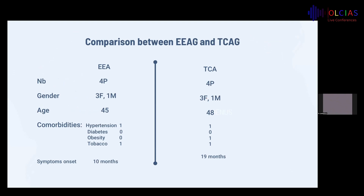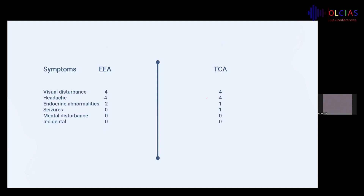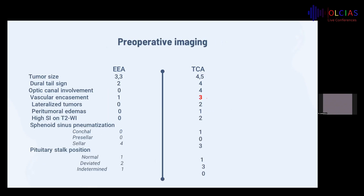Comparing the two groups: number and gender are the same, with no significant difference. Mean age was 45 in the first group and 48 in the second. No difference in comorbidity. Symptom duration was 10 months for the first group and 19 months for the second. Visual disturbance and headache were the same in both groups. Endocrine abnormality was more frequent in the first group. Tumor size was smaller in the endoscopic endonasal approach group. Dural tail sign was more frequent in the transcranial group, as was vascular encasement (3 cases).